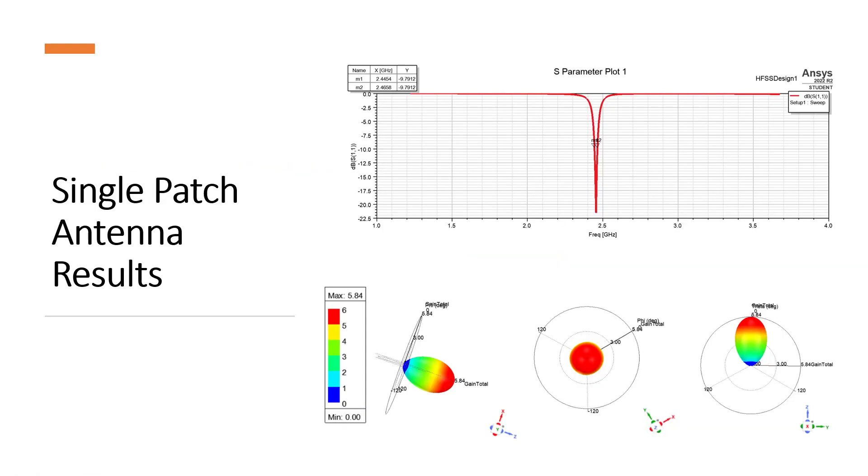And here is my single patch antenna results. I see that the operating frequency brings a return loss which is less than minus 20 dB, and this is a good sign. And we see a smaller bandwidth. The gain is around 6, and we see an isotropic radiation from this view, which is expected.